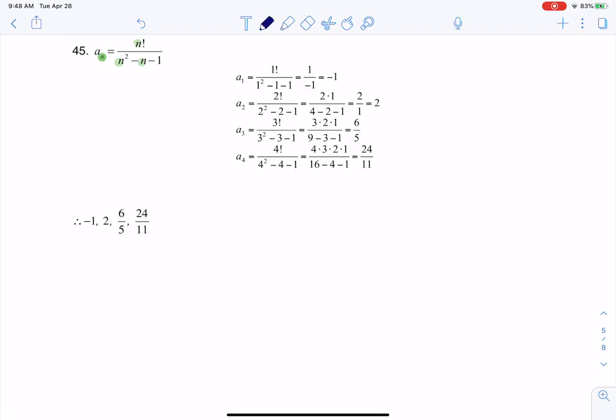So here you see for a sub 1, me plugging in 1, 1 factorial, if we go to our calculator, it's 1. 1 squared minus 1 minus 1 is negative 1, and that ratio is negative 1. So I know a sub 1 is negative 1.